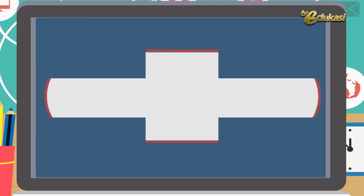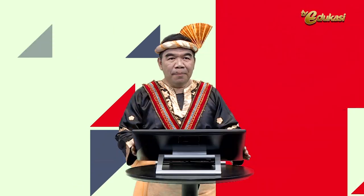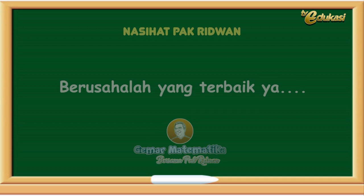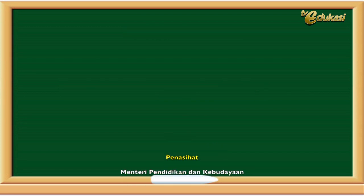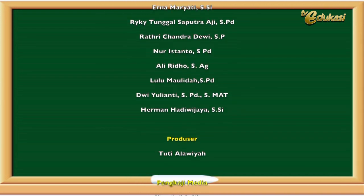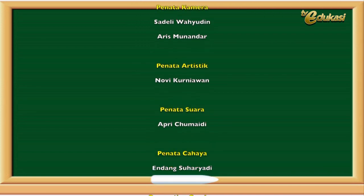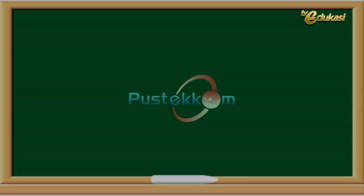Kesimpulan: jadi bilangan yang habis membagi 26, 39, dan 46 dengan meninggalkan sisa berturut-turut 2, 3, dan 4 adalah 6. Jelas ya anak-anak, jawaban soal tentang kue tadi berapa? Betul, 168 hari. Mudah ya? Ingat, belajar matematika bersama Pak Ridwan membuat matematika menjadi lebih mudah. Selamat menikmati.